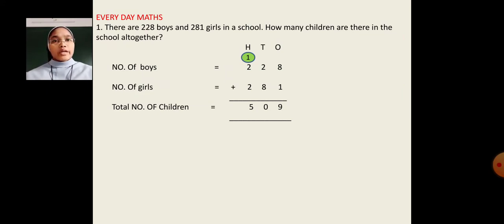Question number 1. There are 228 boys and 281 girls in a school. How many children are there in the school all together? Dear students, to find out the total number of children in a school, what we have to do? We have to add these both numbers. We have to arrange this number in 1's place, 10's place and 100's place and we have to add it.